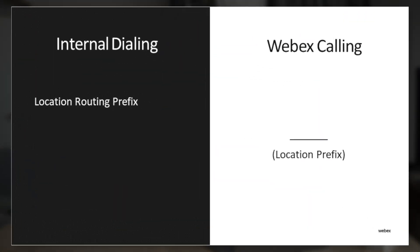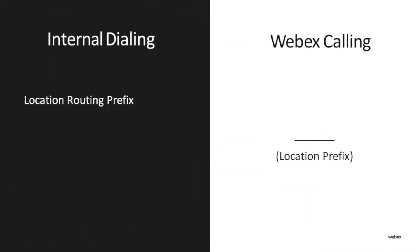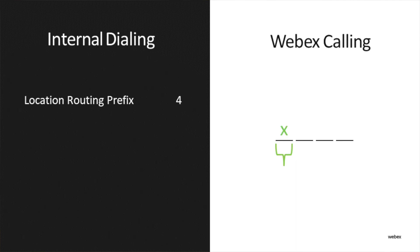To set this up, the first thing you'll need to consider is how many digits you want your location prefix to be — it can be two, three, or four, whatever fits your needs. For our purposes, we're going to set it to four digits, because our location prefix is actually going to be made up of two parts. The first part is a single digit that will serve as a steering digit, and the second part is a three-digit location number.